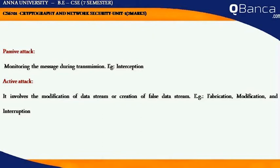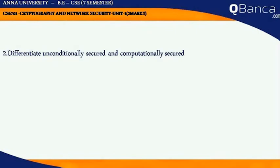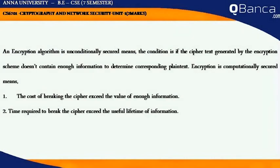Differentiate Unconditionally Secured and Computationally Secured. An encryption algorithm is unconditionally secured if the ciphertext generated by the encryption scheme does not contain enough information to determine the corresponding plaintext. Encryption is computationally secured if the cost of breaking the cipher exceeds the value of the information, or the time required to break the cipher exceeds the useful lifetime of the information.